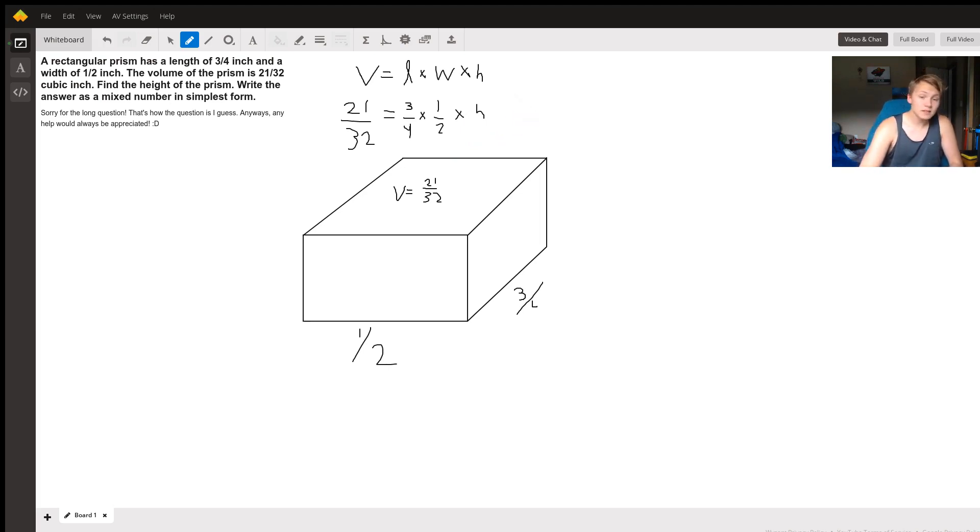And this is going to give us the solution for our height. We have only one variable so we can solve for it. So we're going to multiply each side by the reciprocals of these, so we're going to multiply the left side by four-thirds and by two, which is the same as two over one.